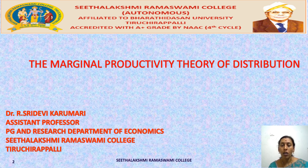When we talk about the factors of production, we know that they are land, labor, capital, and organization. The essence of this theory is that the price of a factor of production depends upon its marginal productivity. That is, each factor of production such as land, labor, capital, and organization gets its reward according to the contribution it makes to the total output.